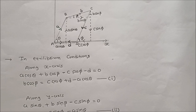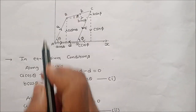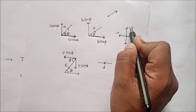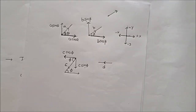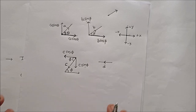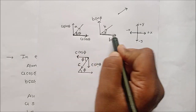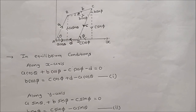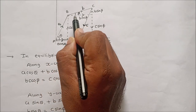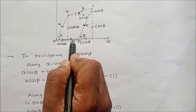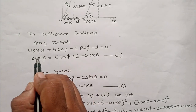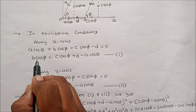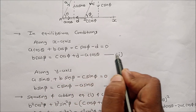For equilibrium of the mechanism, the sum of components along the x-axis and y-axis must equal zero. Taking the sum of components along the x-axis — A cos theta and B cos beta are in the positive x-direction, while C cos phi and D are in the negative x-direction — gives: A cos theta + B cos beta − C cos phi − D = 0. Therefore B cos beta = C cos phi + D − A cos theta. This is equation number 1.